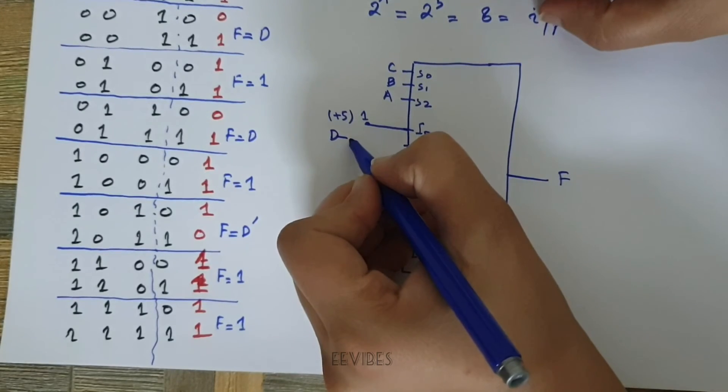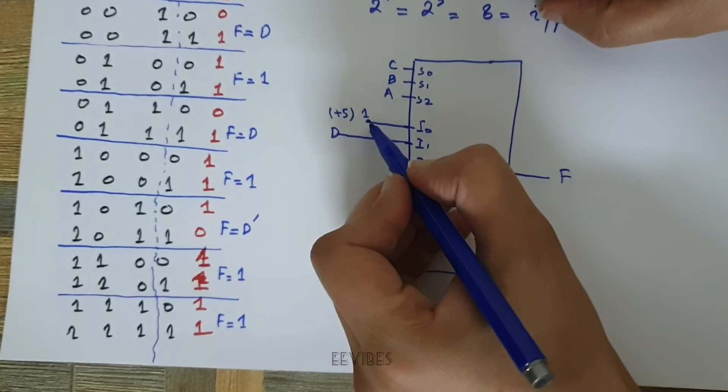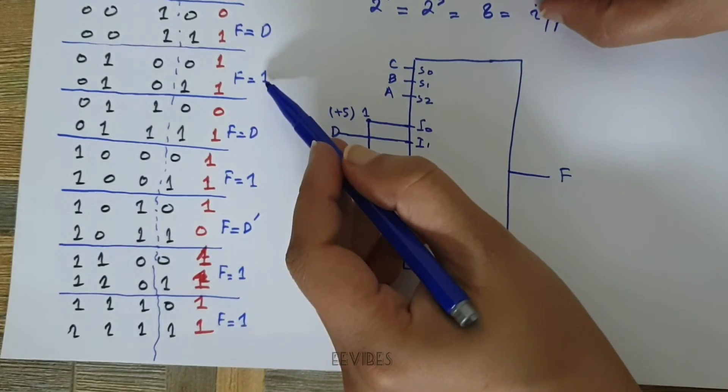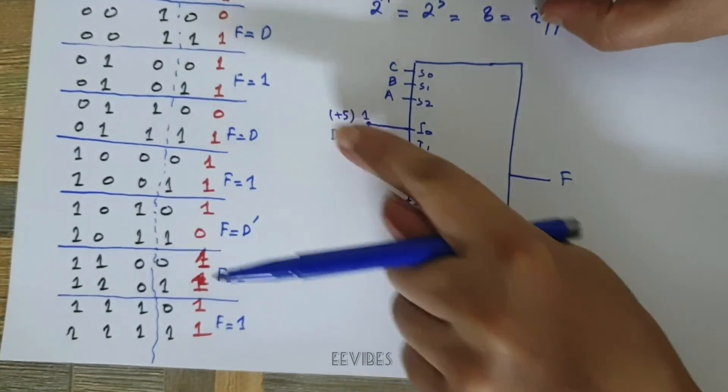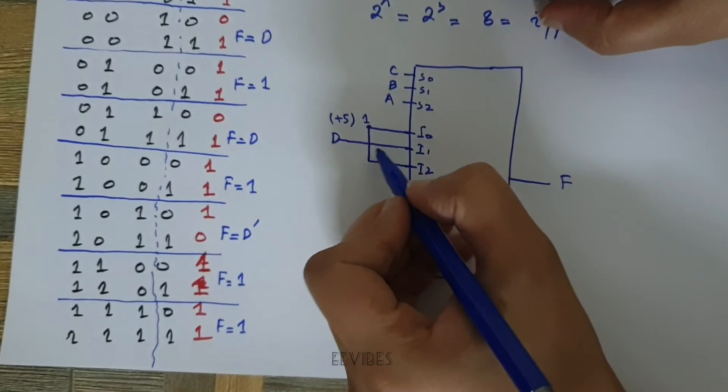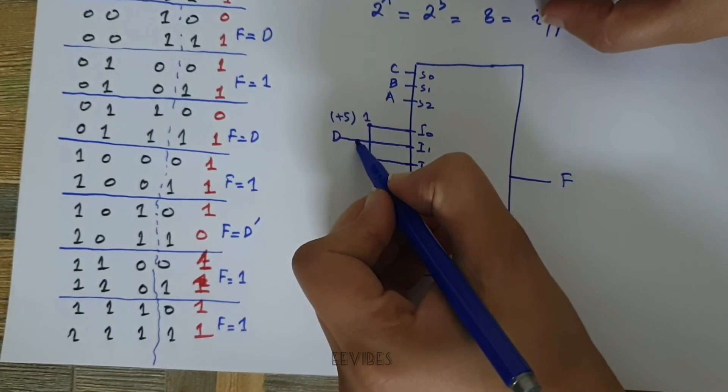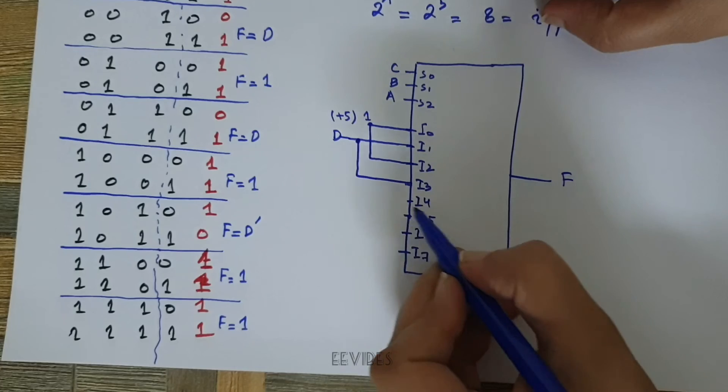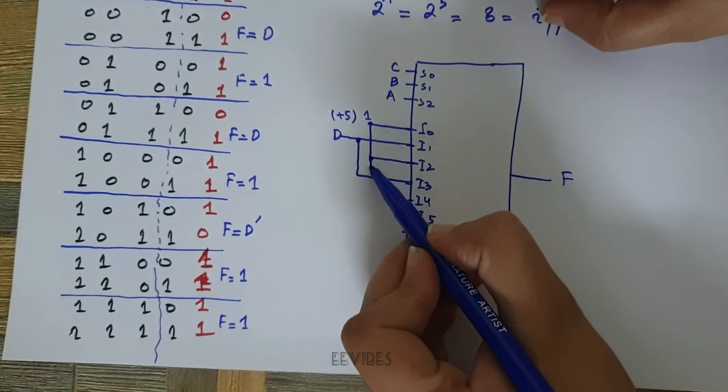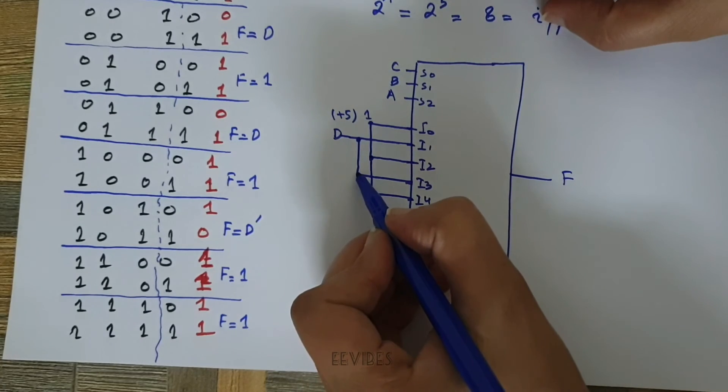Then next, I2 is again equal to 1, that's why F is equal to 1. I have connected it with 1. Then F is again equal to 1 for I4. Then F is equal to D complement, so I will